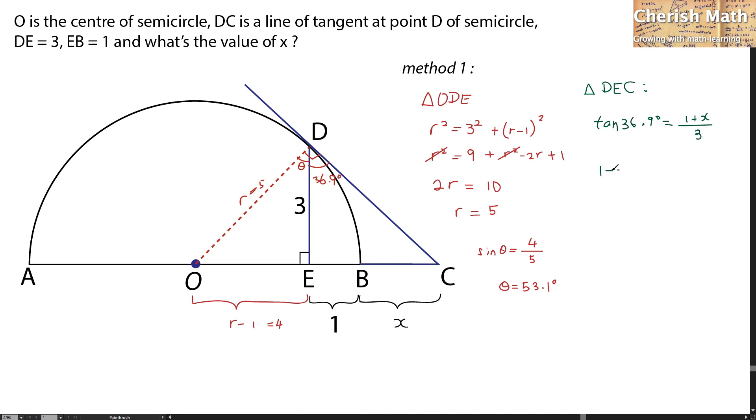And the value of 1 plus x is going to be 3 times tangent 36.9 degrees, and finally the value of x is 1.25 units.